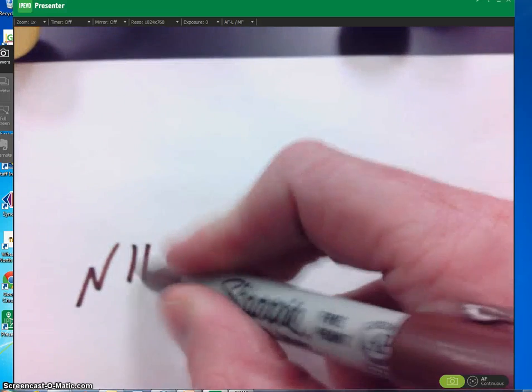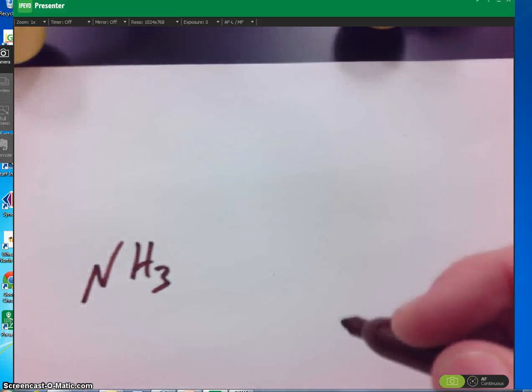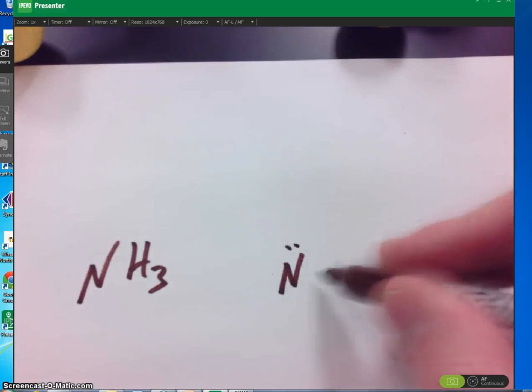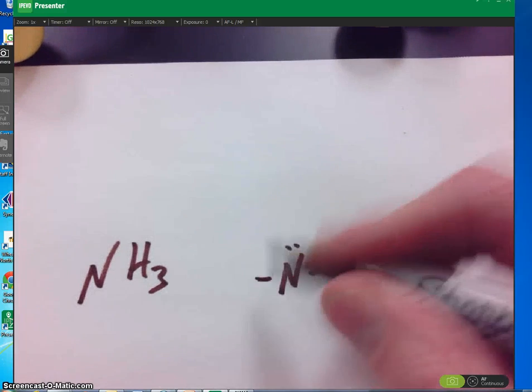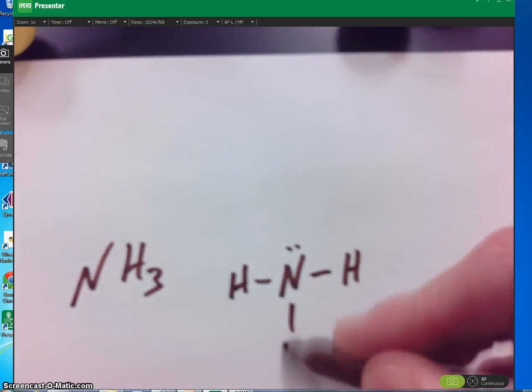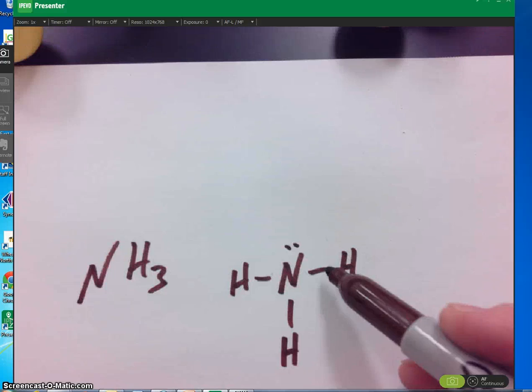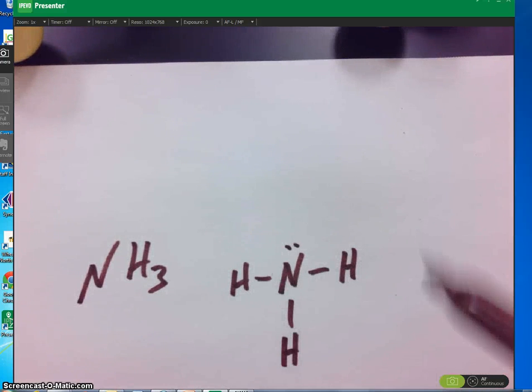NH3. The Lewis dot structure looks like this. But you know that there are four electron pairs, and these want to get as far apart as possible. The way that they do that is by occupying all three planes. So let's redraw it.